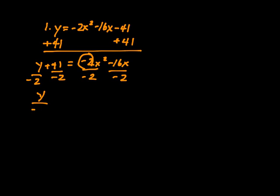So I have y over negative 2 minus 41 over 2 equals x squared plus 8x.